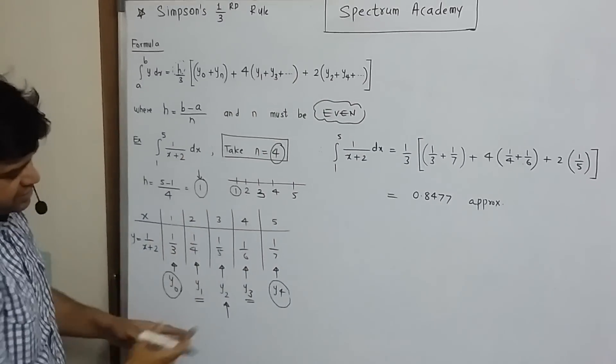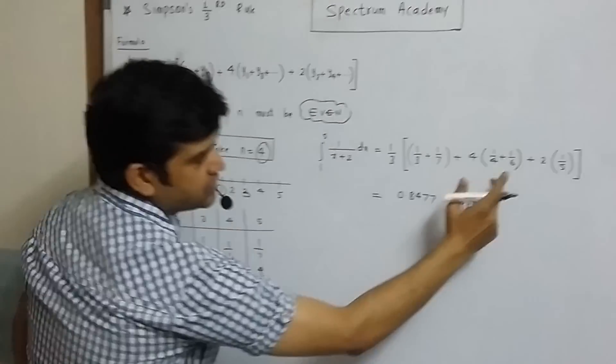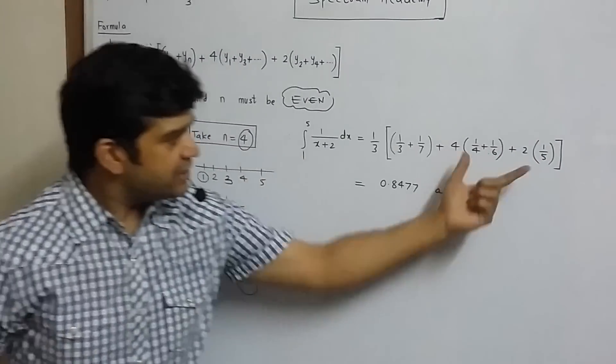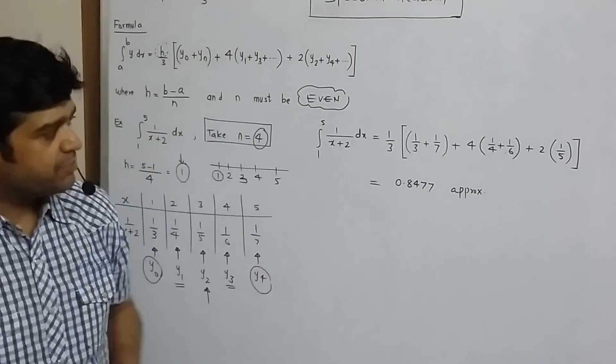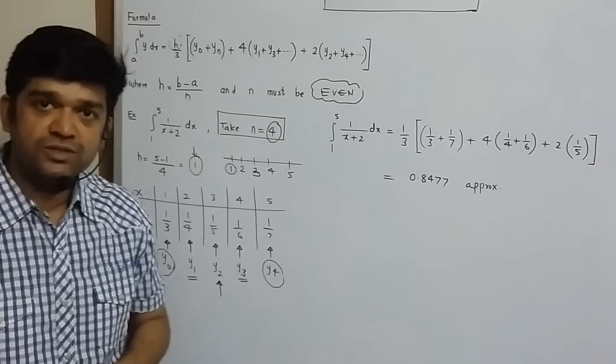Now, we have only 1 even ordinate here. That is 1 by 5. So, 2 into 1 by 5. We can calculate this using calculator and we get approximate value of 0.8477.